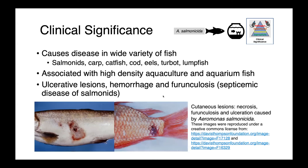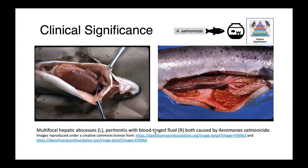Aeromonas salmonicida causes disease in a wide variety of fish — perhaps most importantly from an aquaculture perspective, the salmonids. It's associated with disease particularly in high-density aquaculture settings but also in aquarium fish. What we tend to see are ulcerative lesions, hemorrhages, and furunculosis — a furunculosis being a large cutaneous abscess. On this fish here you can see hemorrhagic lesions near the tail. On necropsy, internal lesions can be seen as well: this fish on the left has multifocal hepatic abscesses visible as white nodules in the liver, and the fish on the right has peritonitis with blood-tinged abdominal fluid. Both animals were septicemic with Aeromonas salmonicida.